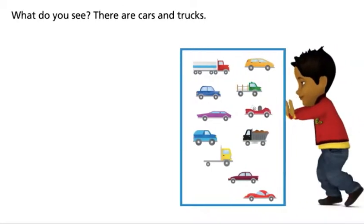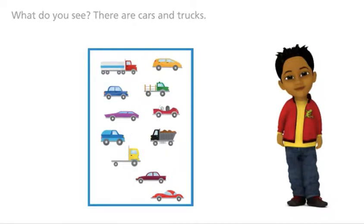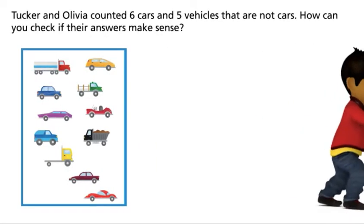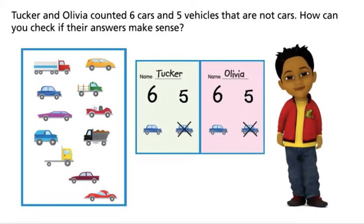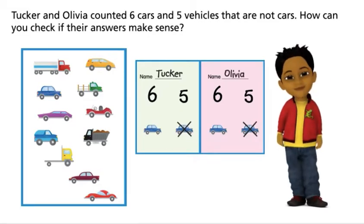What do you see? There are cars and trucks. Tucker and Olivia counted six cars and five vehicles that are not cars. How can you check if their answers make sense?